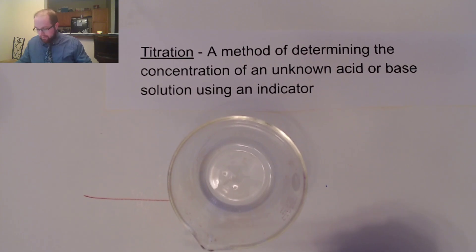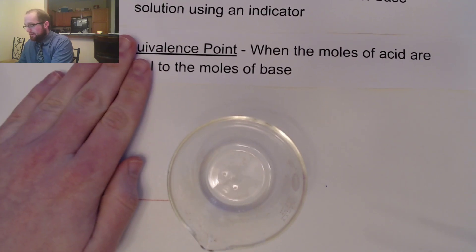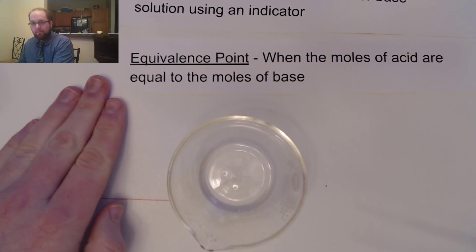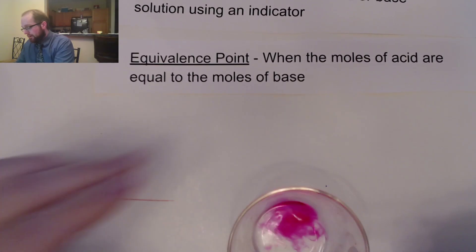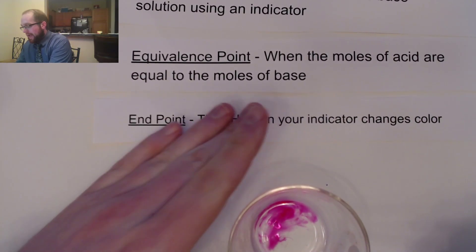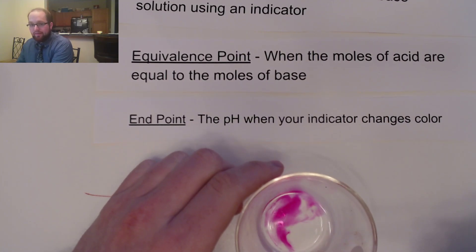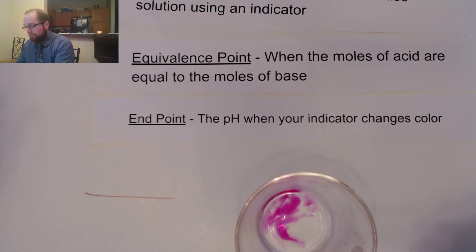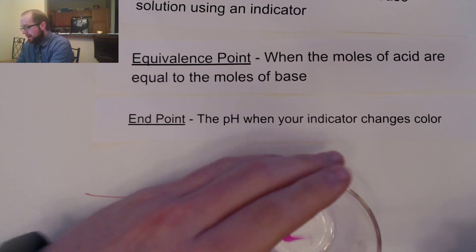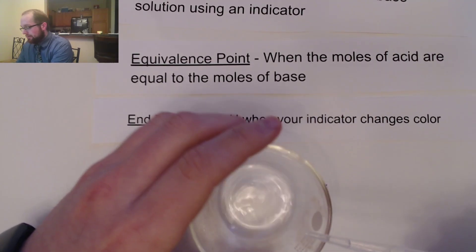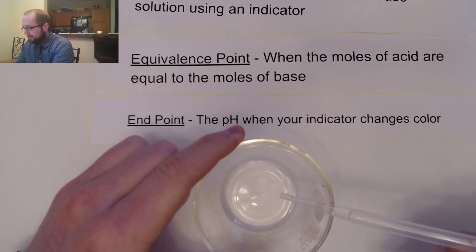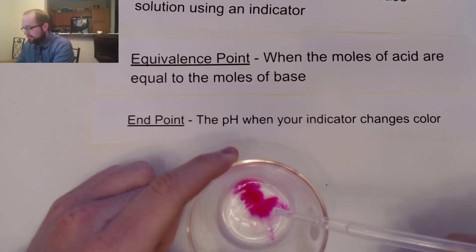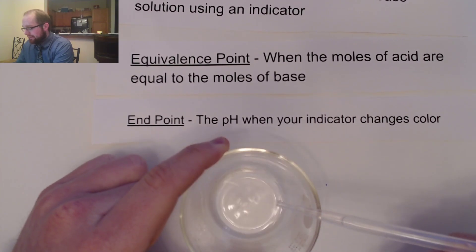The equivalence point in a titration is simply when the moles of acid are equal to the moles of base. How do I know once I've reached the equivalence point? I chose an indicator that has an end point at the same pH as my equivalence point. In the case of my acid and base here, they will react and be equal to each other at pH 7, and that is the end point of phenolphthalein — which is perfect. Not all indicators are good for every titration.